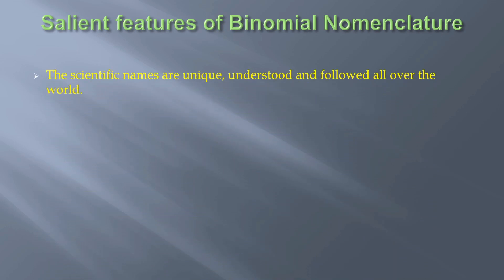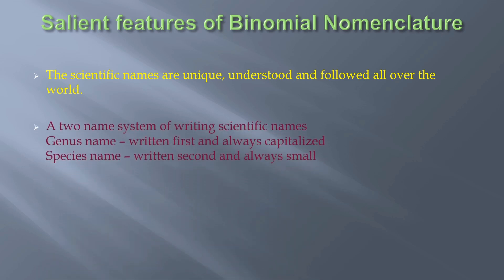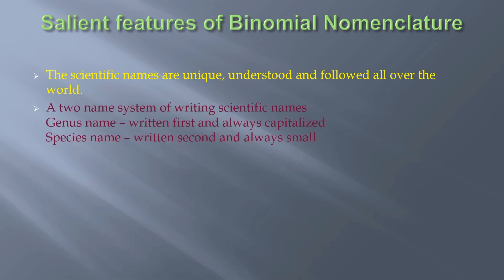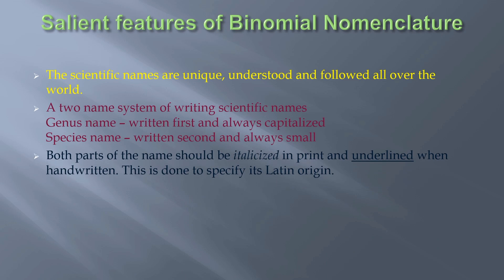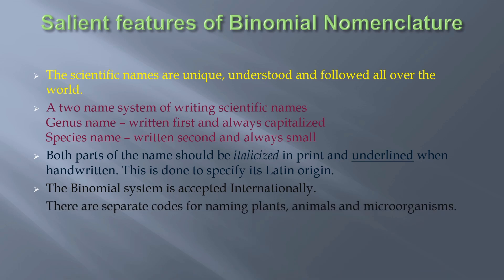The scientific names are unique, understood and followed all over the world. In this two-name system, the genus name is written first and always capitalized, while the species name is written second and always in lowercase. Moreover, both parts of the name should be italicized in print and underlined when handwritten. This is done to specify its Latin origin. The binomial system is accepted internationally, and there are separate codes for naming plants, animals, and microorganisms.